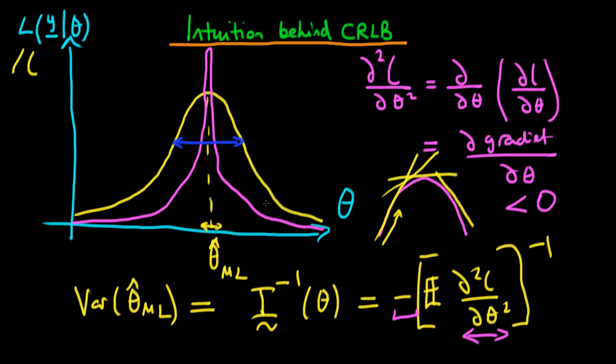Because of that, we say we are more sure of the estimate obtained from the mauve line than from the yellow line. Represented another way, the variance of theta-hat MLE from the mauve line is going to be less than the variance of theta-hat MLE from the yellow line. But I still haven't explained why there is this inverse relationship between the variance of our maximum likelihood estimator and the second order derivative of log likelihood with respect to the parameter.